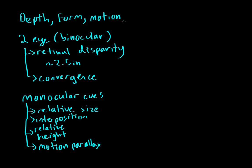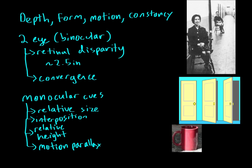Another perceptual category is constancy, and there are a few different types. The first is size constancy. When we look at two women, one appears bigger because she casts a larger image on our retina. Yet we know these two women are more or less the same size. Even though one woman casts a bigger retinal image, we know they're fairly the same size. That's size constancy.